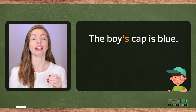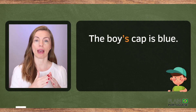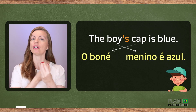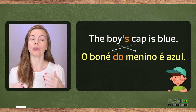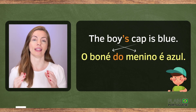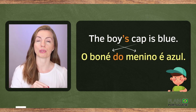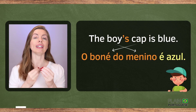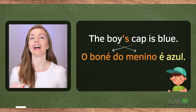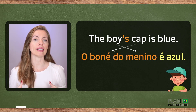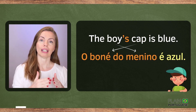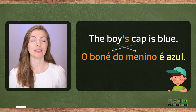What does English have that Portuguese doesn't? Apostrophe — yes, apostrophe to indicate possession. If you want to say in Portuguese 'the boy's cap is blue', you must first reverse the word order and then use the preposition 'de' with contractions if needed. So the sentence 'the boy's cap is blue' in Portuguese is 'O boné do menino é azul.' The sentence literally translates into 'the cap of the boy is blue.'